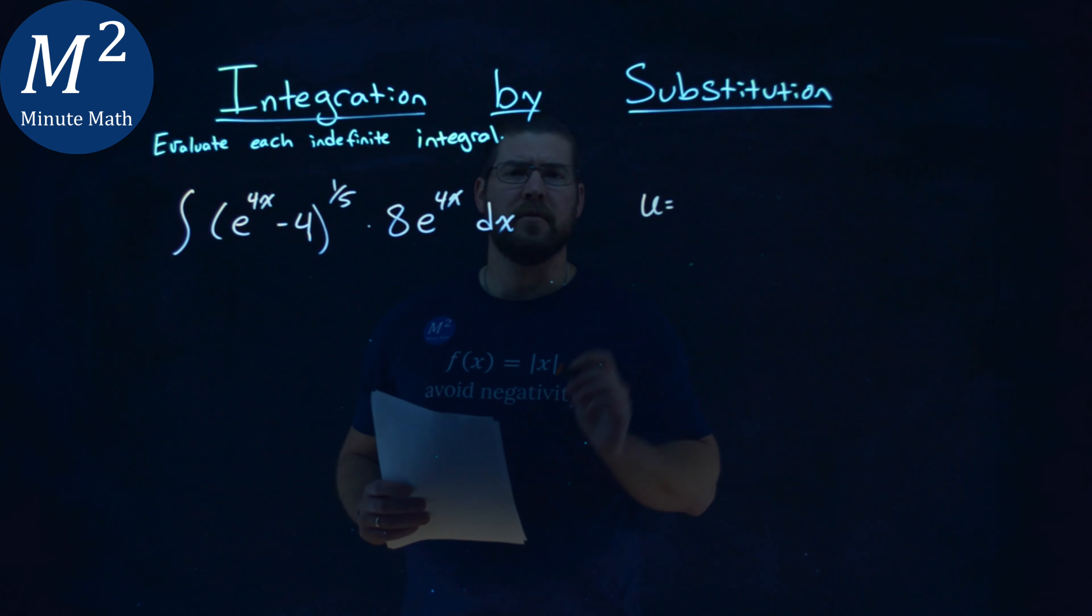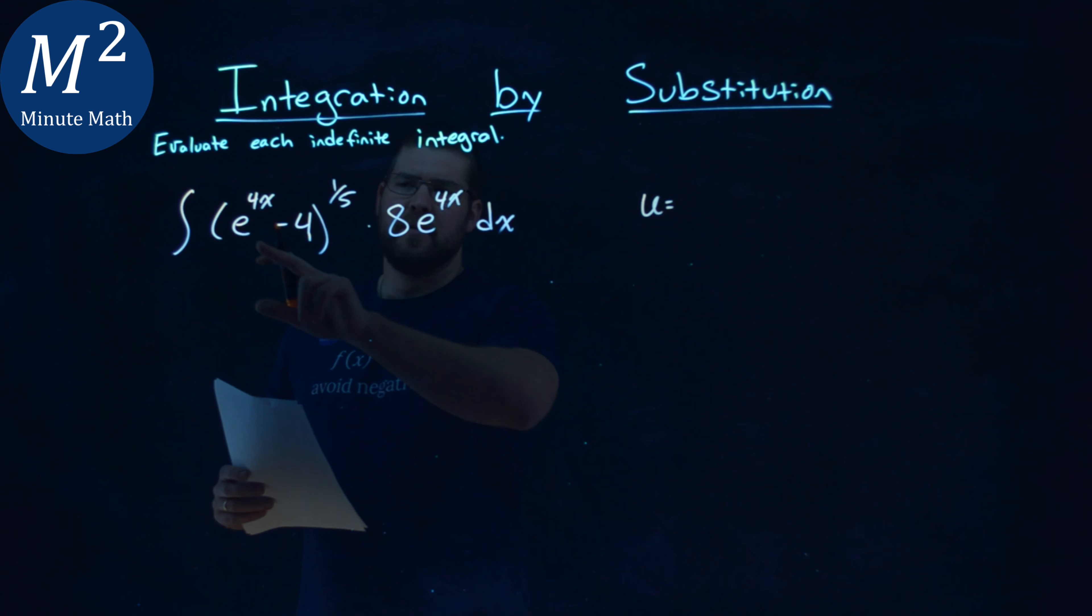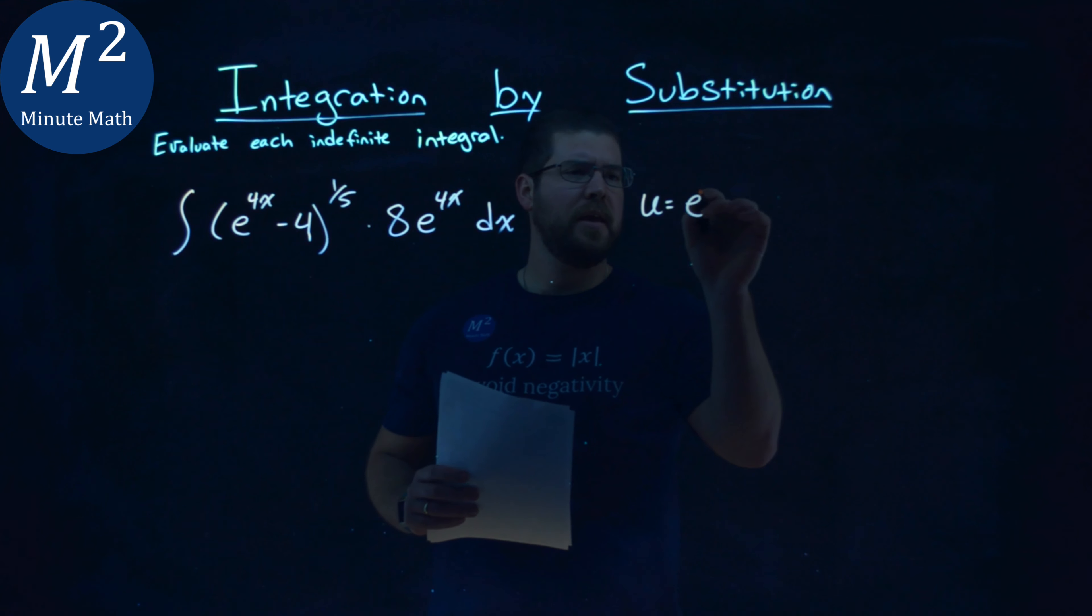Now I want to have a u value for my substitution here, and I usually pick something that's inside the parenthesis. So let's go try that out. e to the 4x here minus 4.